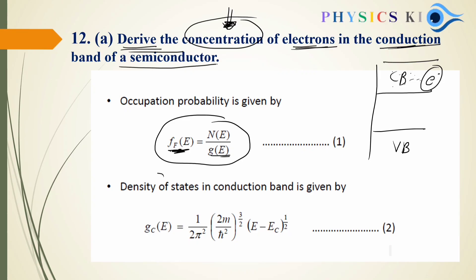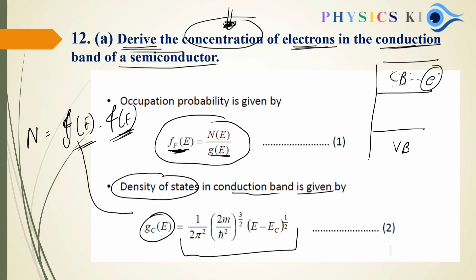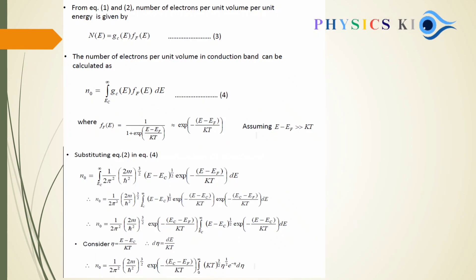F(E) is the Fermi function: N(E)/G(E), where G(E) is the density of states. For the conduction band, we use GC. Our target is N, so N = G(E) × F(E). F(E) is the Fermi level function whose value we already know, and GC is the density of states for the conduction band.